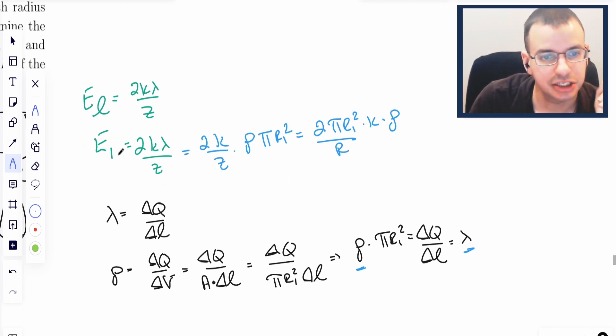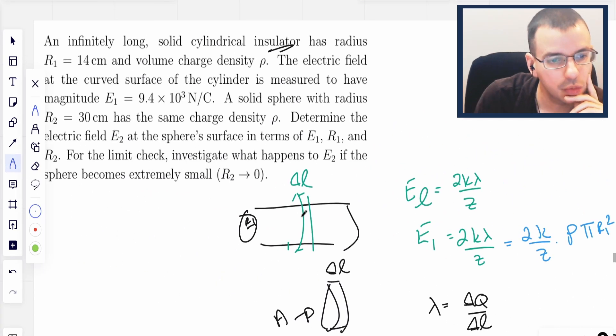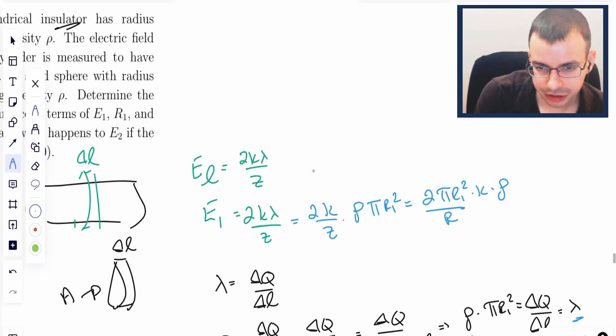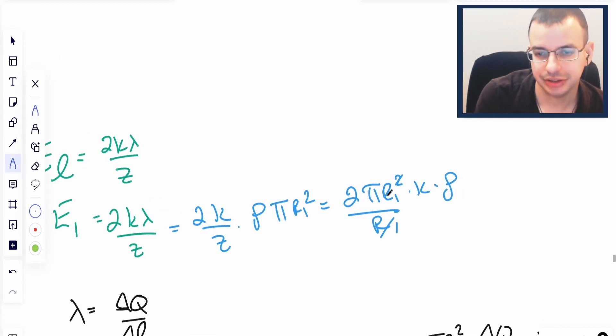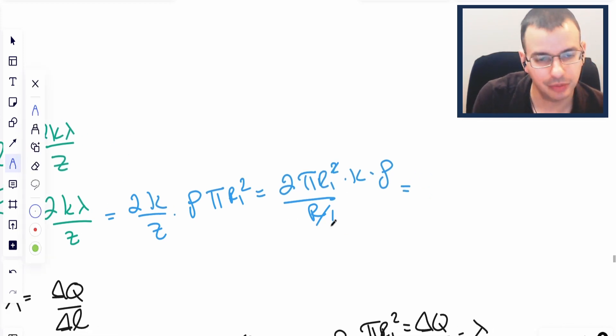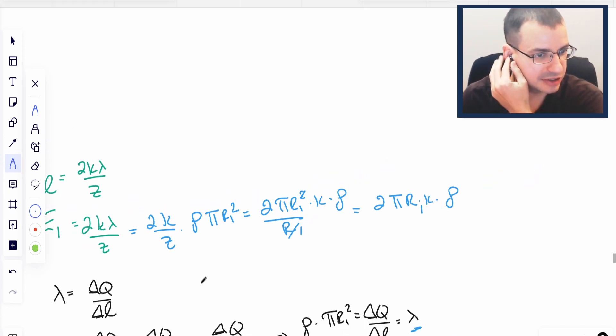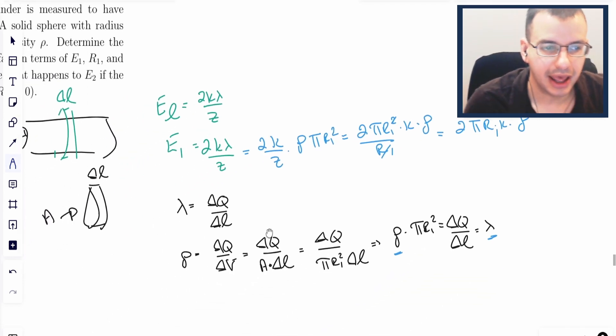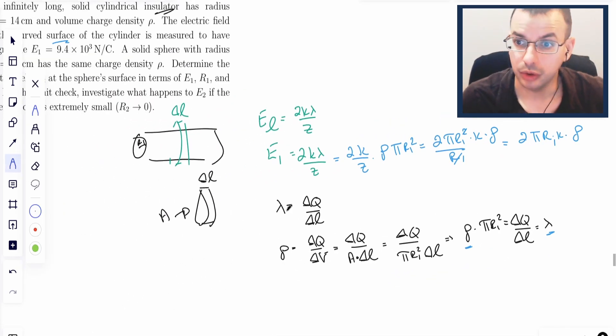So 2 pi R1 squared times K times rho over Z. And Z, in this case, we're measuring from the surface, and the surface is R1. So we cancel the R1s. We have 2 pi R1 K rho. So that is the electric field at the surface R1 for E1.